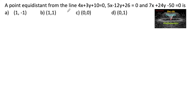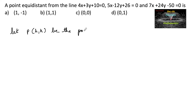Let point P be the point equidistant from the three lines: 4x + 3y + 10 = 0, 5x − 12y + 26 = 0, and 7x + 24y − 50 = 0.